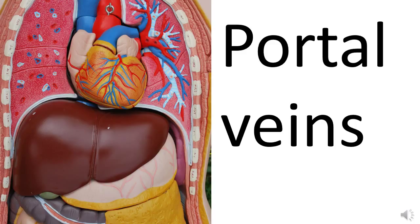In the capillaries, blood gives up oxygen, picks up waste carbon dioxide, delivers nutrients, and picks up nitrogenous waste products. That blood is then drained into the venous system. Veins are defined because they carry blood from the capillaries back to the heart - it's a directional thing. The pulmonary veins carry blood from the lungs back to the heart; the systemic veins carry blood from the body tissues back to the heart.